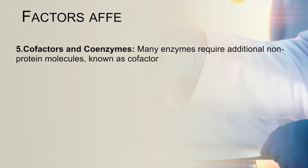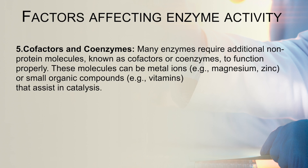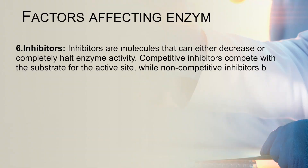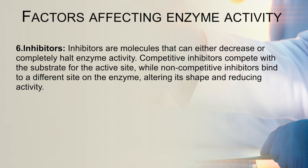The next factors are cofactors and coenzymes. Many enzymes require additional non-protein molecules known as cofactors or coenzymes to function properly. These molecules can be metal ions such as magnesium or zinc, or small organic compounds such as vitamins, that assist in catalytic processes. The next factor is inhibitors. Inhibitors are molecules which can either decrease or completely halt enzyme activity. Competitive inhibitors compete with the substrate for the active site binding, whereas non-competitive inhibitors bind to a different site on the enzyme, altering its shape and reducing enzymatic activity.